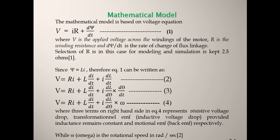The mathematical model is based on the voltage equation. The applied voltage equals the resistance drop plus the inductance drop: V = iR + dψ/dt, where V is the applied voltage across the winding, R is the winding resistance, and dψ/dt is the rate of change of flux linkage. The selected value of R for modeling and simulation is 2.5 ohms.